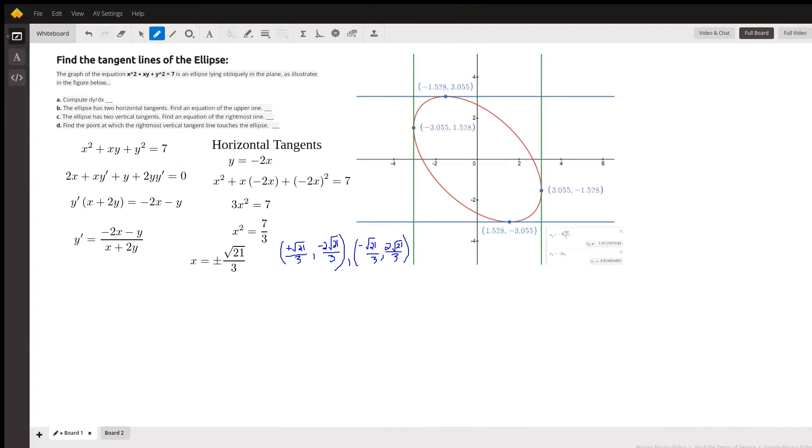You're given the equation of this ellipse right here and asked to do this stuff. To find dy/dx we'll use implicit differentiation, so we have to use the product rule here which yields these two terms. Leave the terms with y prime on the left side, factoring out the y prime, take the other two terms to the right side of the equal sign and then divide by the coefficient of y prime.